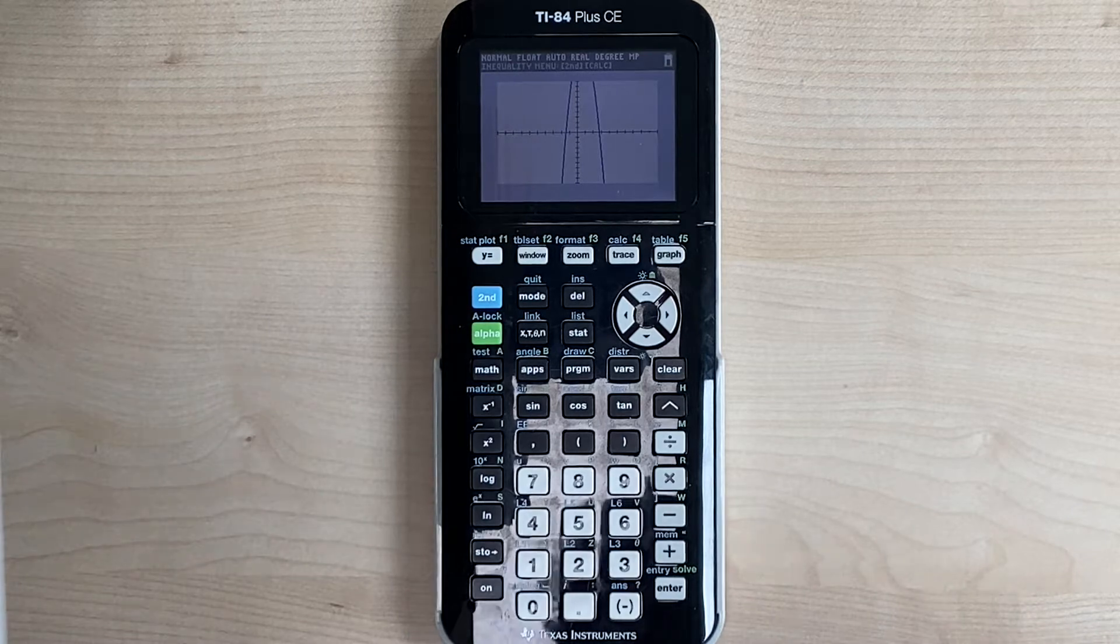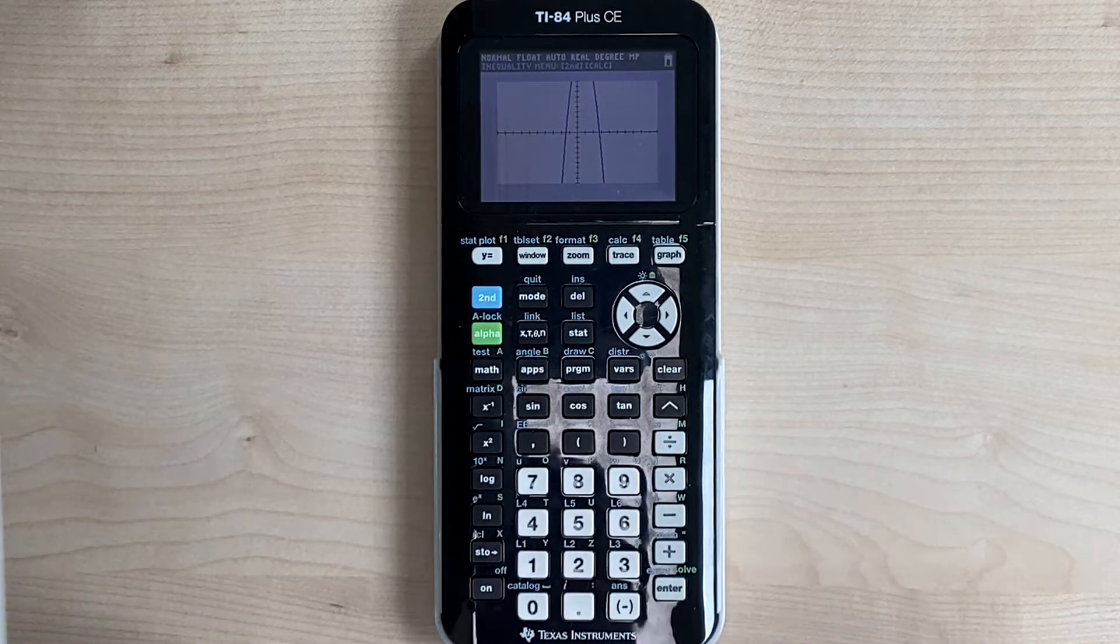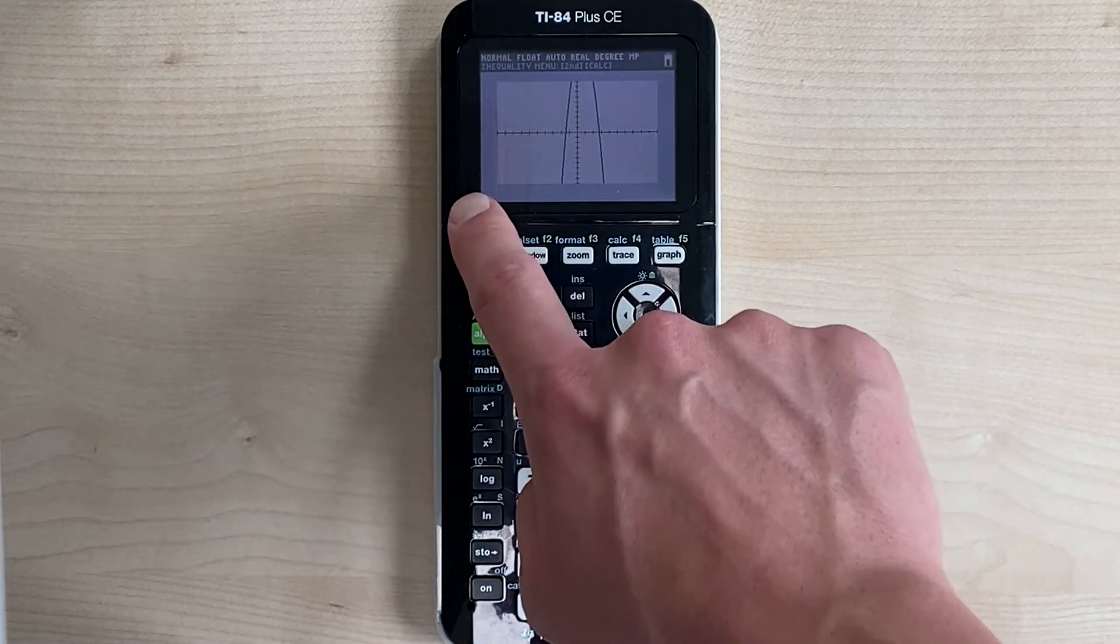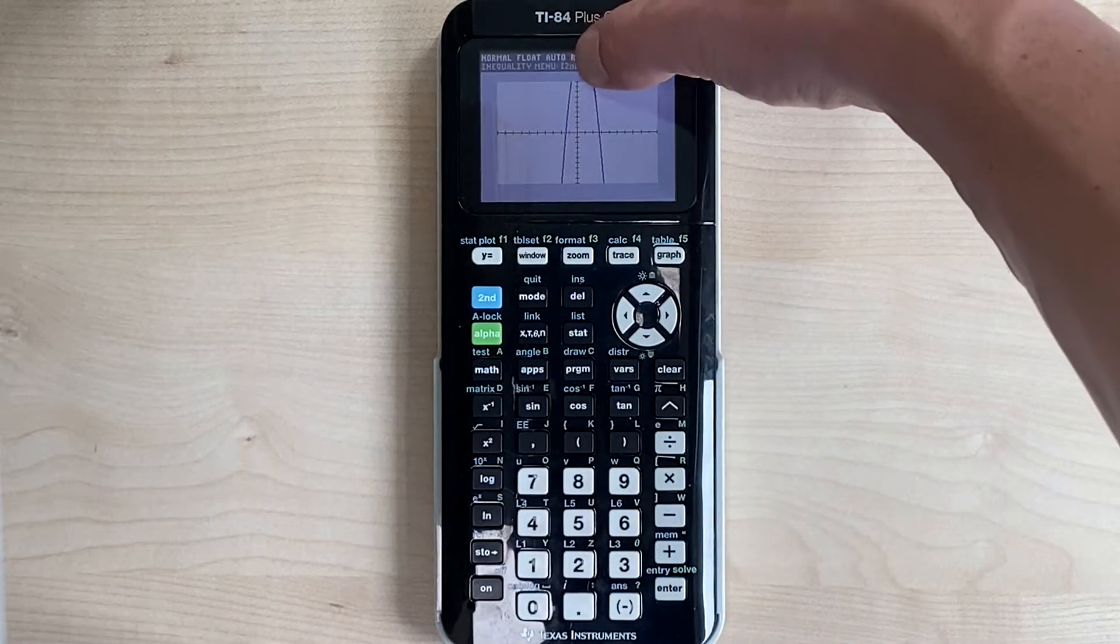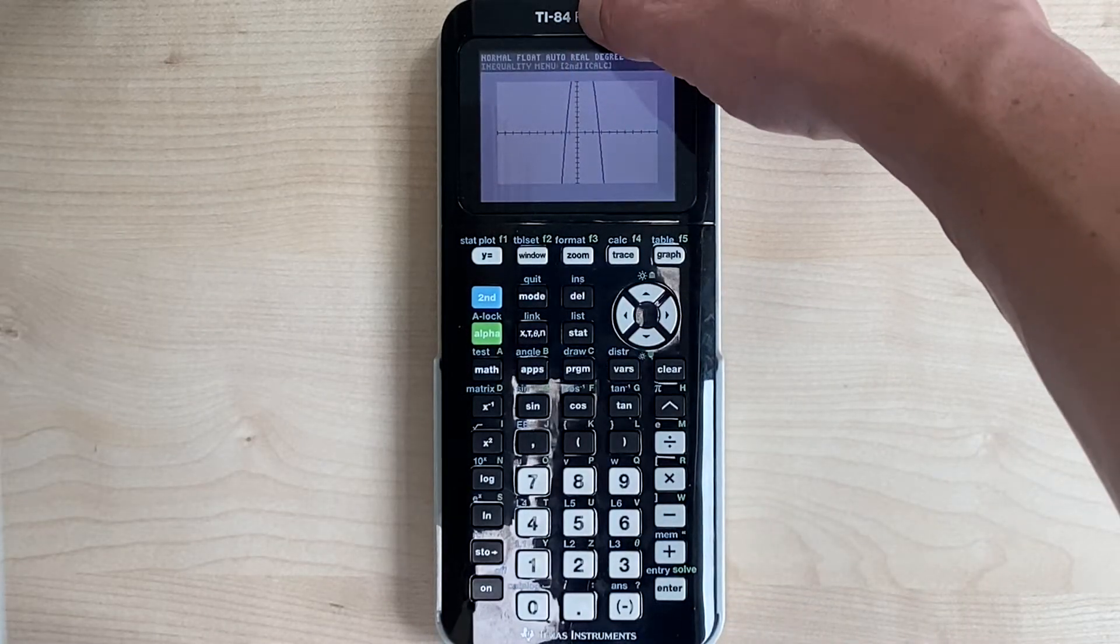Now, one thing that's important about a quadratic is to be able to see the vertex. Well, right now, this is our window, and we cannot see the vertex. The vertex of this parabola is out of our window.